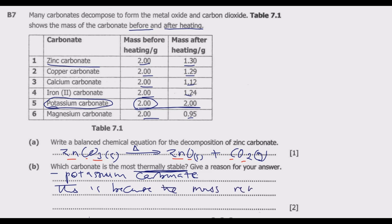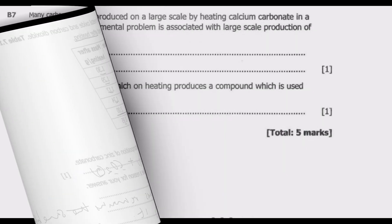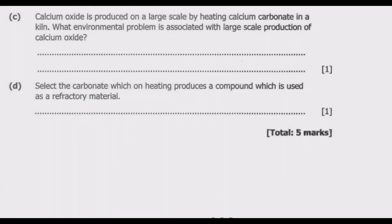Question (c): Calcium oxide is produced on a large scale by heating calcium carbonate in a kiln. What environmental problem is associated with large scale production of calcium oxide? If you look at the process of producing calcium oxide from calcium carbonate, we have calcium carbonate which is solid, then we decompose this to calcium oxide which is solid plus carbon dioxide gas.